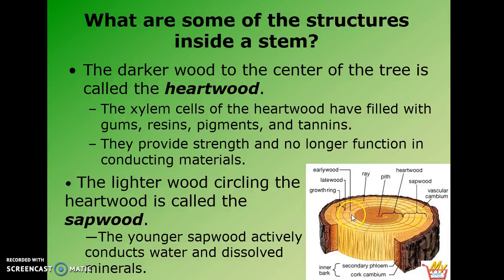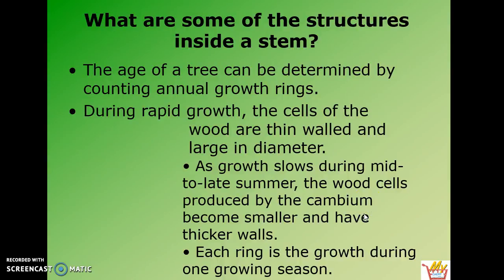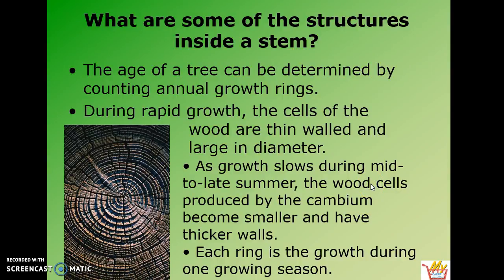Each one of these rings shows us the growth of a tree — you can count those rings and determine how old a tree is, and you can also determine if it was a good year or a bad year. During rapid growth, the cells of the wood are thin-walled and large in diameter. As that growth slows in mid to late summer, the wood cells produced by the cambium become smaller and have thicker walls. Each ring represents the growth during one growing season, so each ring represents one year.